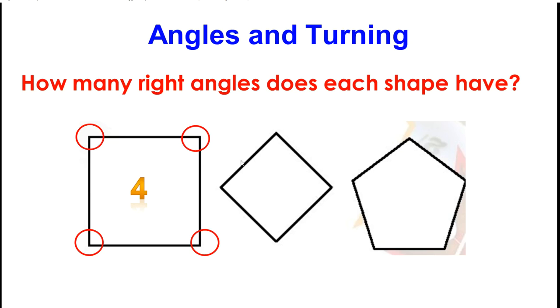How about this diamond or rhombus? Let's look how many right angles it has got. 1, 2, 3, and 4. It has also got 4 right angles.